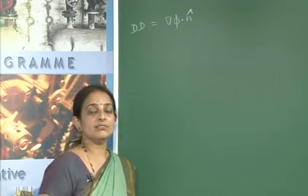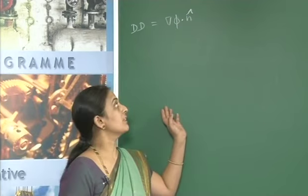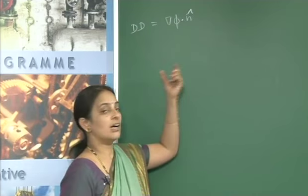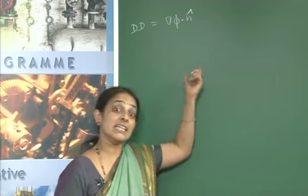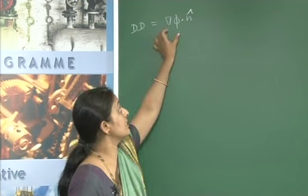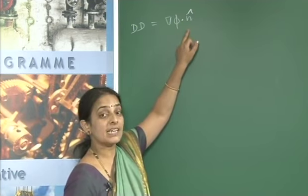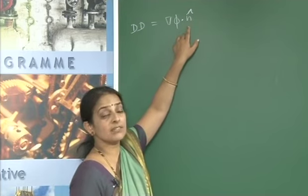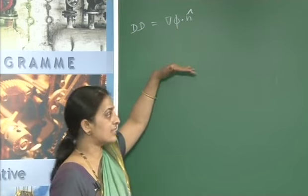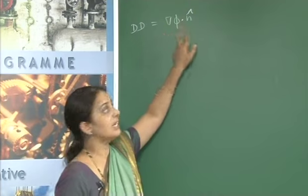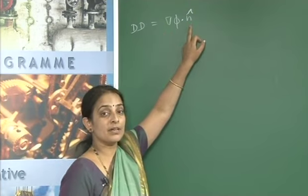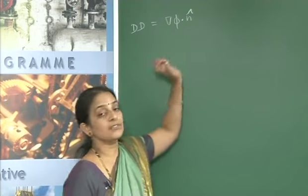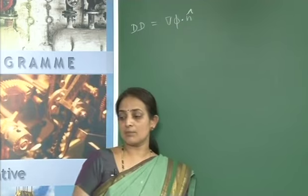To find the directional derivative, we need two things: grad φ, which we can always find given a function φ at a given point, and n̂, the unit normal vector, which varies from question to question. Always treat it as a two-part problem: first find grad φ, then find n̂.